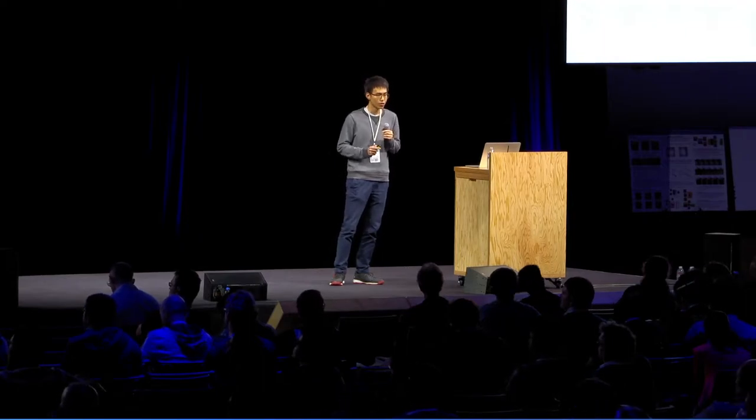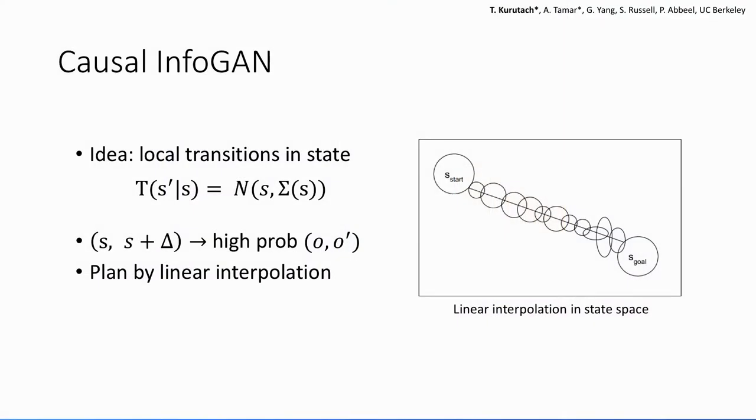So if we train this model, we'll get the latent transition that has high mutual information with the transitions in the observation space, which means it explains the behavior we have in the data. So we can design the transition to be whatever function we want.